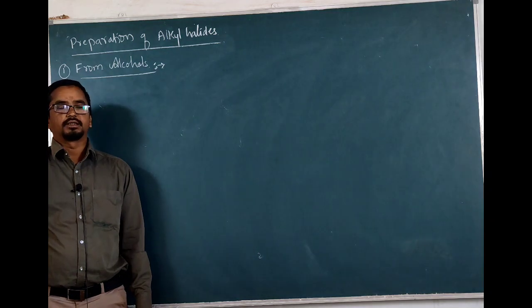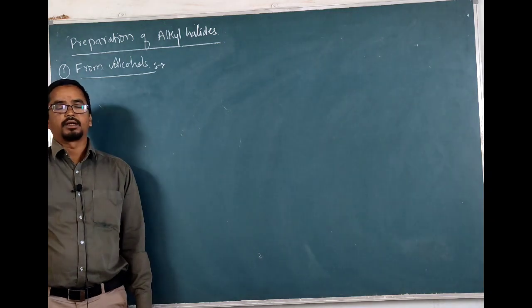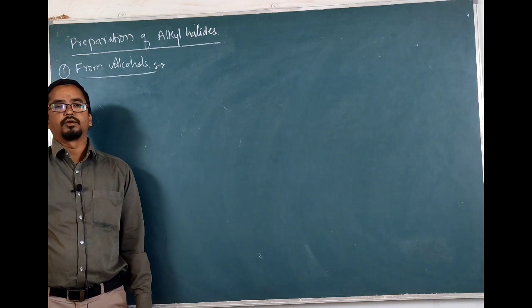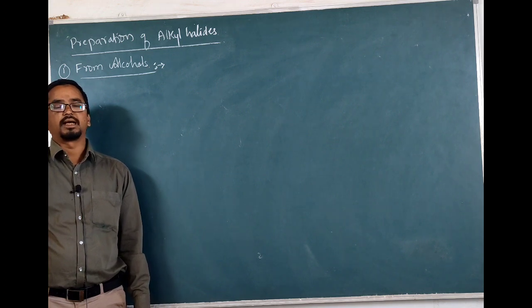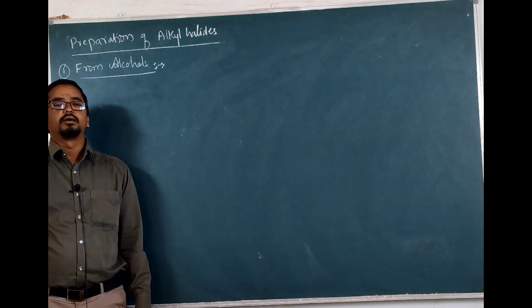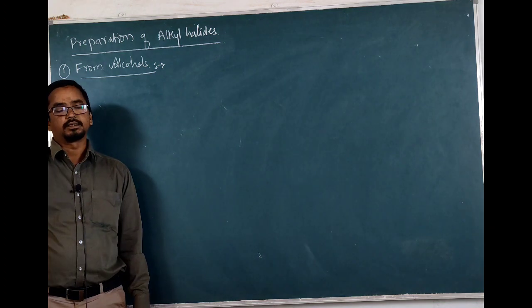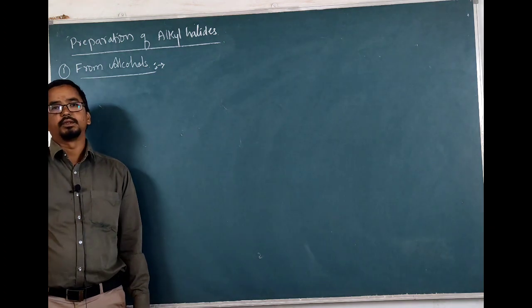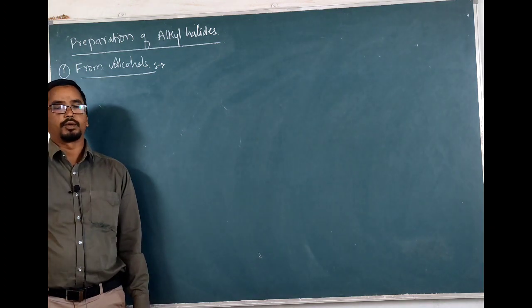Here in this case we will deal particularly with alcohols reacting with hydrogen chloride in the presence of a Lewis acid like ZnCl2, that is anhydrous ZnCl2. They lead to the formation of alkyl chloride.